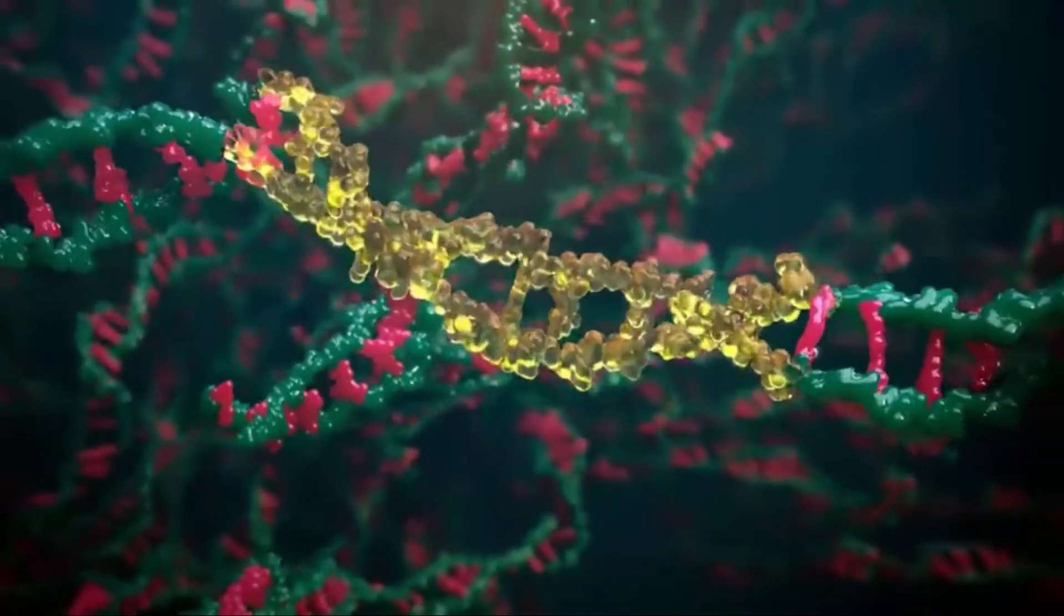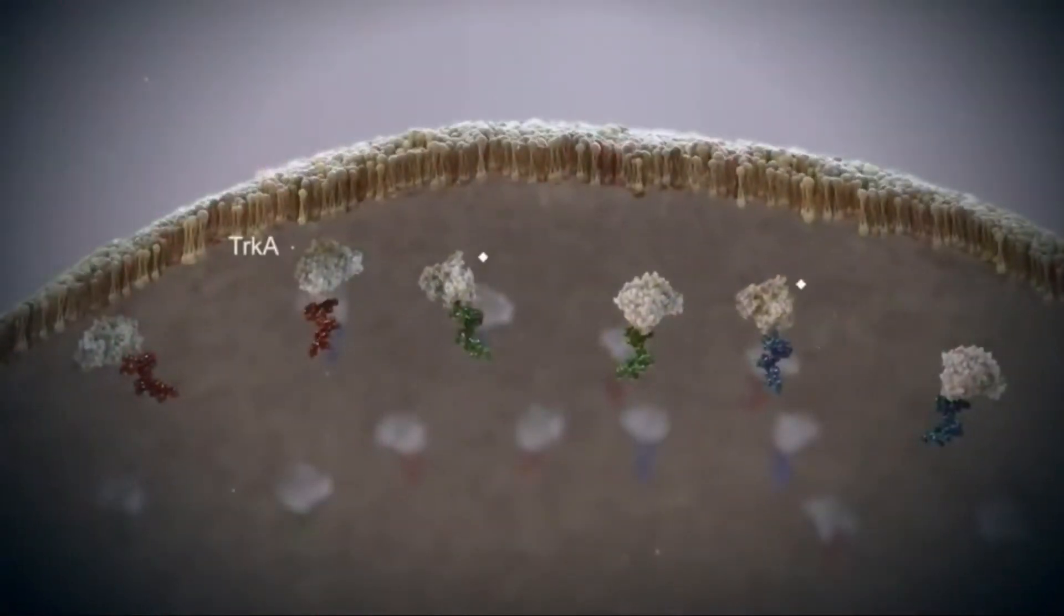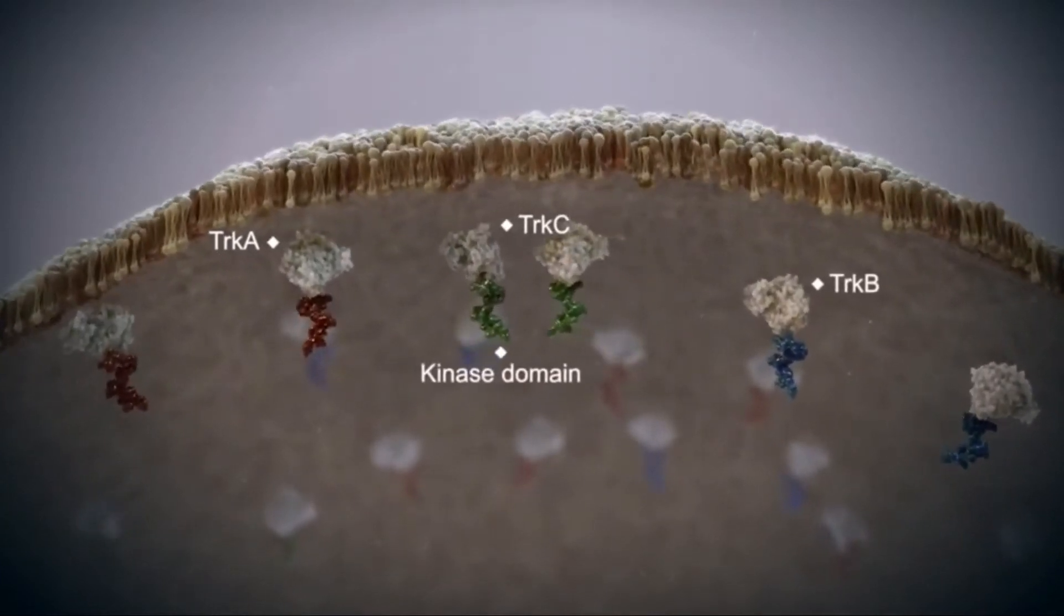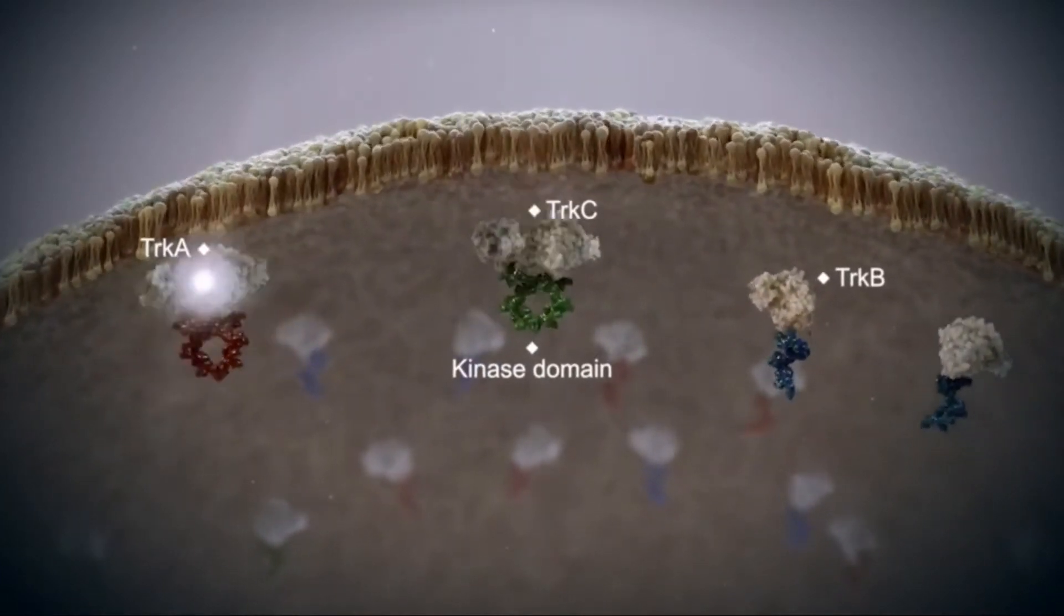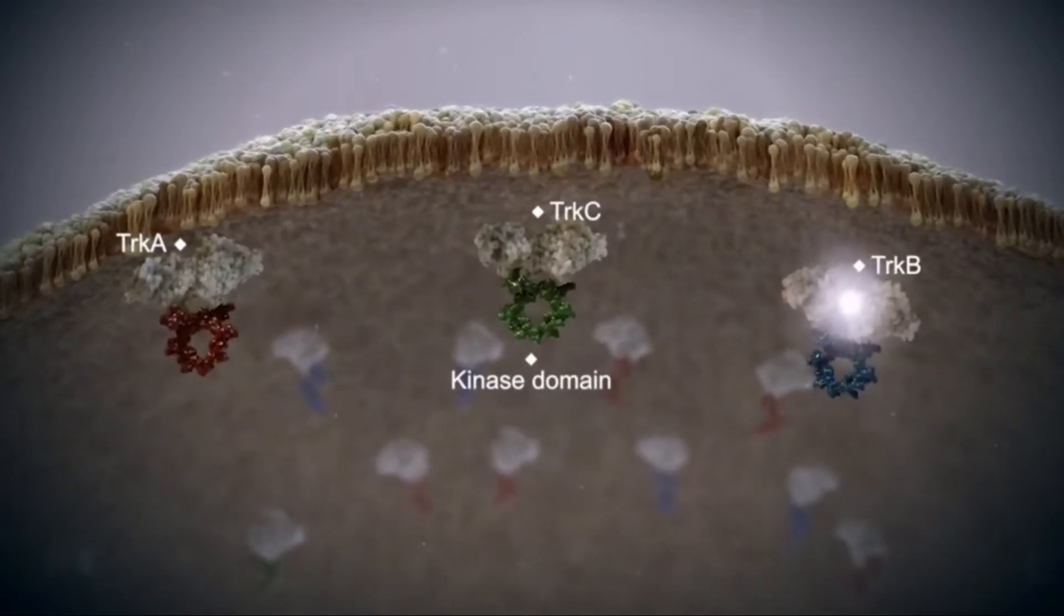If the DNA that codes for the outer segment in one of the NTRK genes is replaced, the resulting fusion protein can pair up inside the cell without binding of neurotrophins outside the cell.